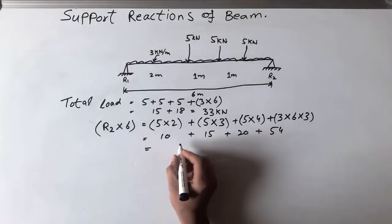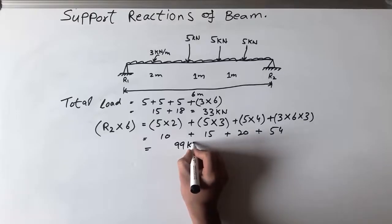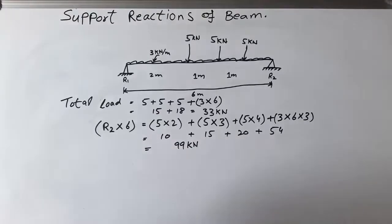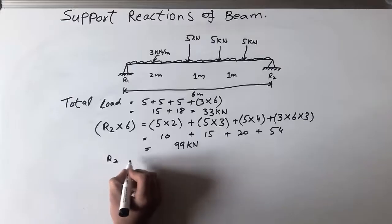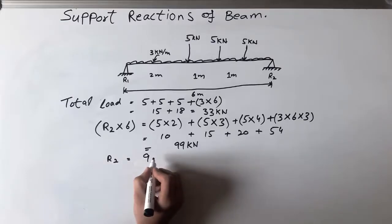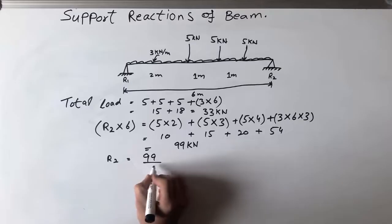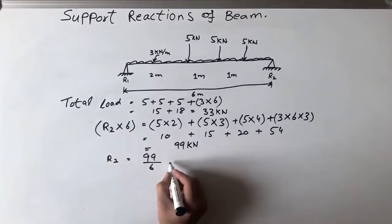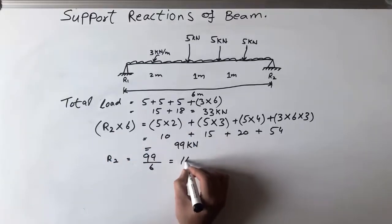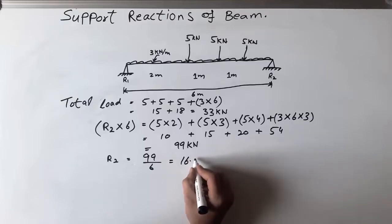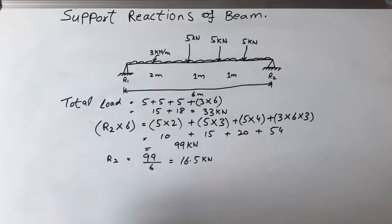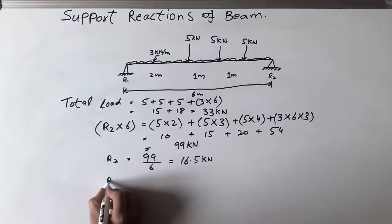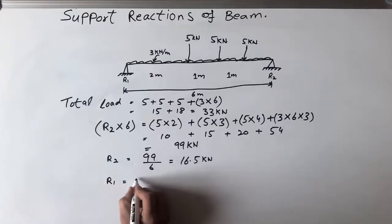The total moment sum comes to 99 kN·m. So R2 is equal to 99 divided by 6, which gives R2 equal to 16.5 kN.